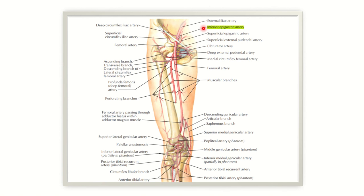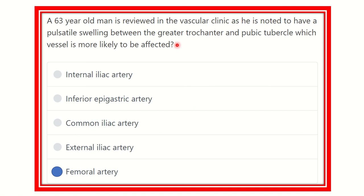In this picture we can see the inferior epigastric artery. Our landmark is between the greater trochanter and pubic tubercle — that means from this line. But we can see the inferior epigastric artery arises more above from this line. So our final answer is the femoral artery. The femoral artery is located between the greater trochanter of the femur and the pubic tubercle.